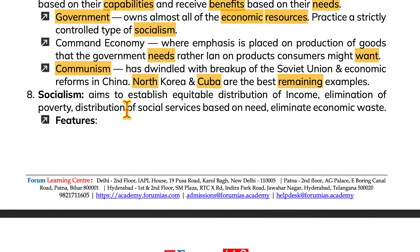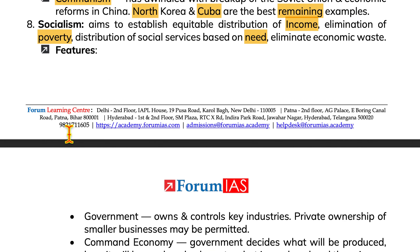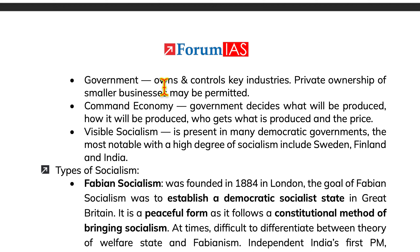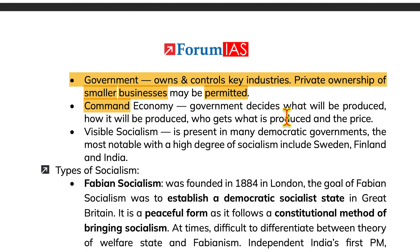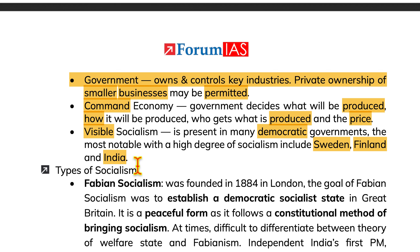Socialism aims to establish equitable distribution of income, elimination of poverty, distribution of social services based on need, and elimination of economic waste. Features of socialism include government ownership and control of key industries, while private ownership of smaller businesses may be permitted. In a command economy, government decides what will be produced, how it will be produced, who gets what is produced, and prices. Visible socialism is present in many democratic governments — the most notable with a high degree of socialism include Sweden, Finland and India.